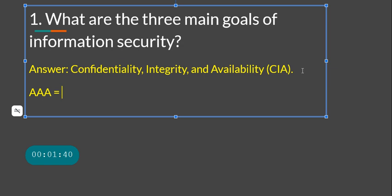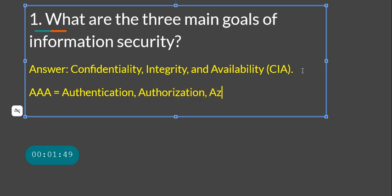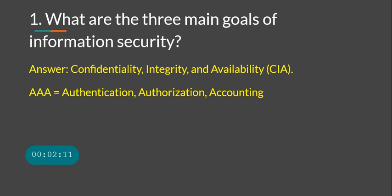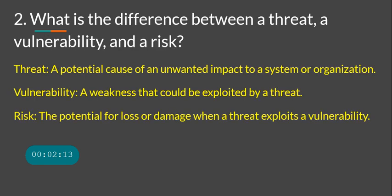A related concept is Triple A, which stands for authentication, authorization, and accounting. Just because you're authenticated to a system doesn't mean you should be able to do whatever you want — that is controlled by authorization. Every action should be logged, which is covered by accounting.